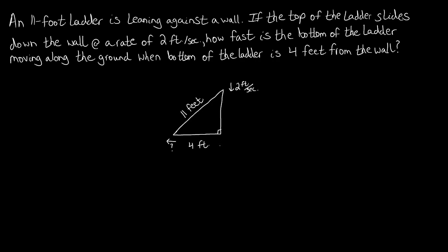The reason this topic is called related rates is because we're trying to figure out, given a problem like this, how to look at the different rates and measurements and relate all of them. Before we get too far into that, let's assign variables. We'll call the height of the wall h — specifically where the top of the ladder makes contact with the wall — and we'll call the base distance x, so x equals 4 feet. The value of h is something we don't know yet.